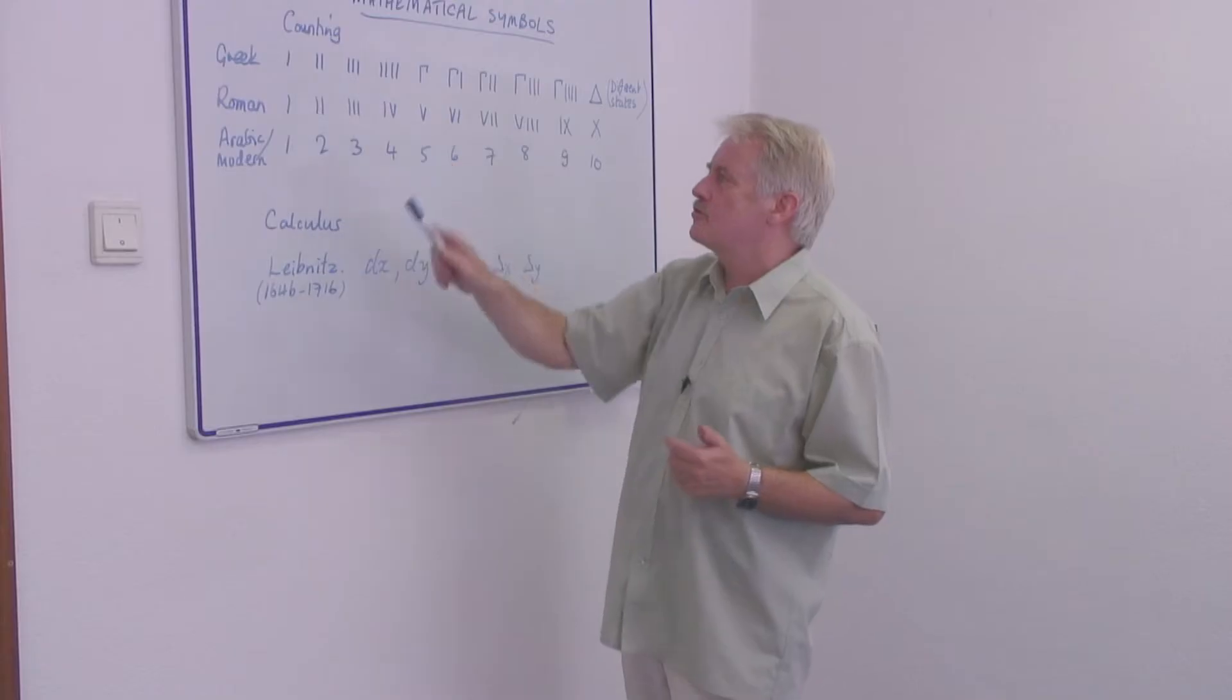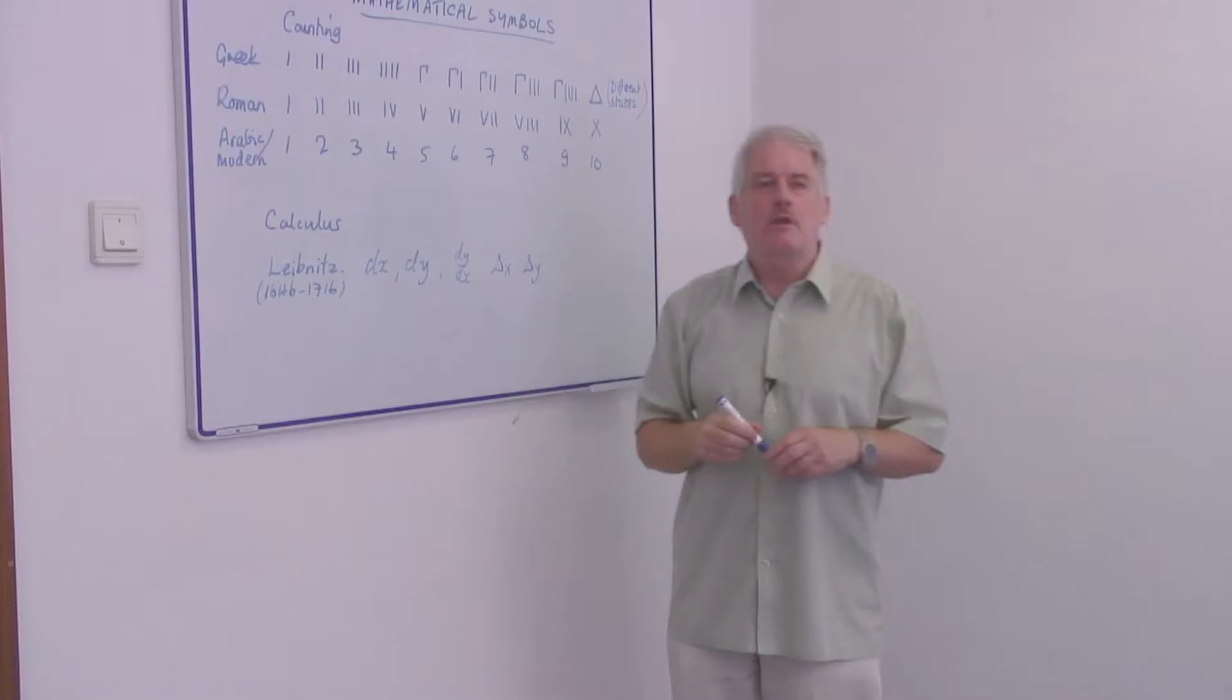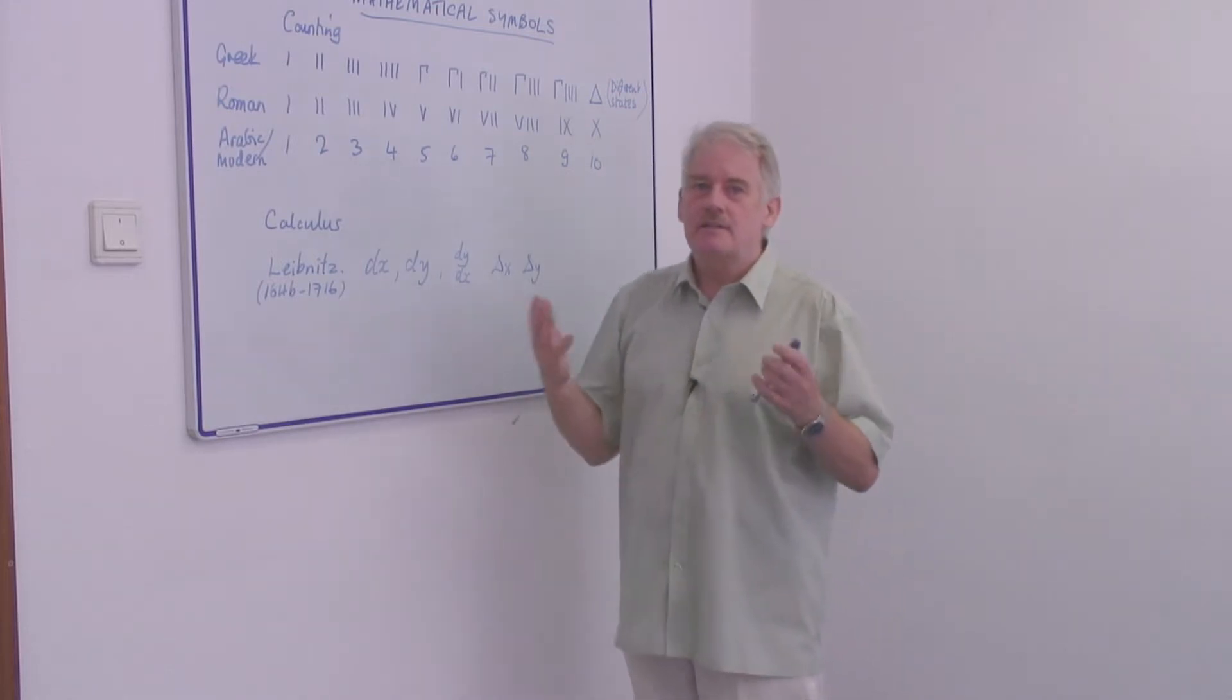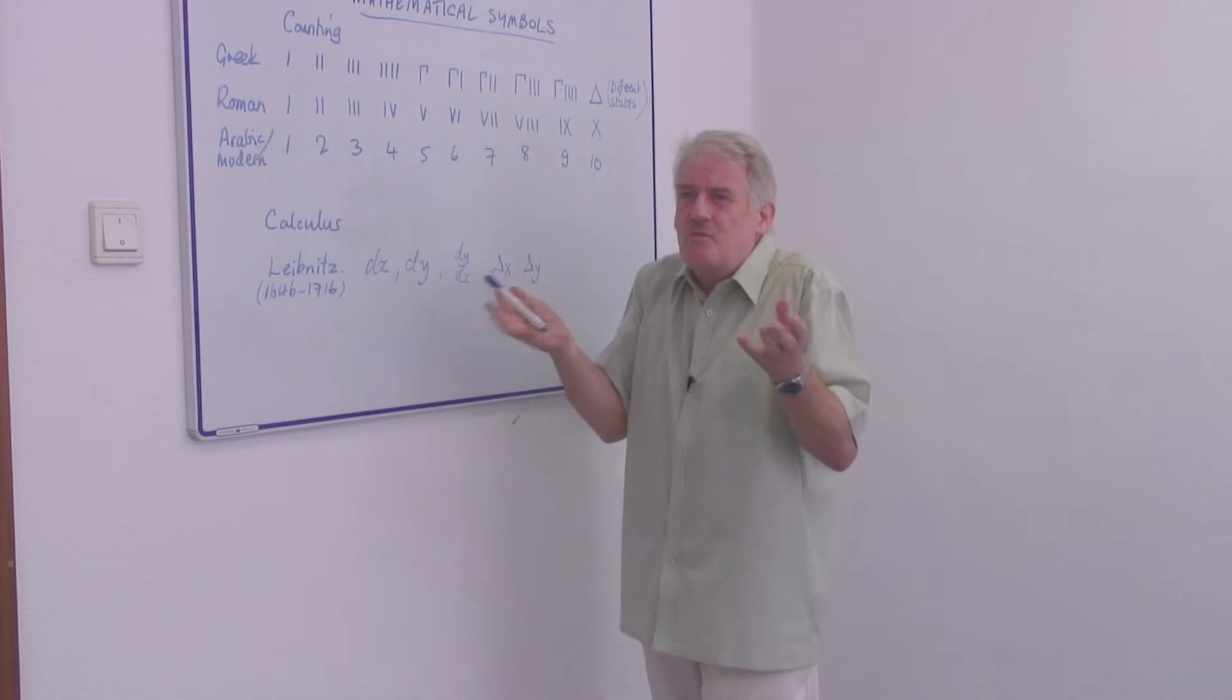One is a single stroke, two is two strokes, three is three strokes, four is four strokes. The trouble is when we get to 596 we have a big problem in deciding what the number is because 596 strokes does not make a sensible thing to work with.